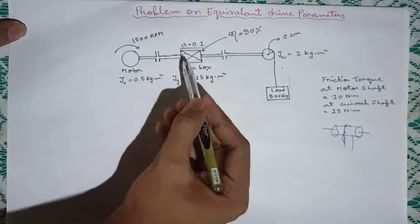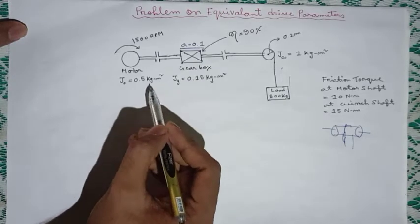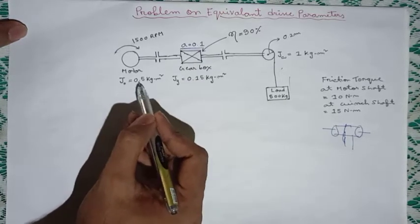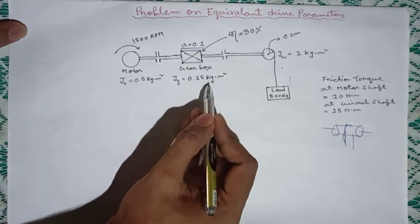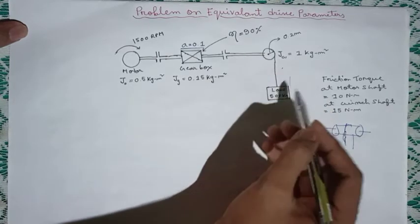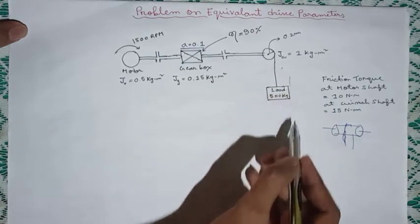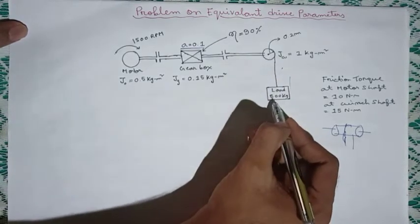The moment of inertia are given. The moment of inertia of the motor is 0.5 kilogram meter square. This is the moment of inertia of the gearbox, this is the moment of inertia of the wind drum.